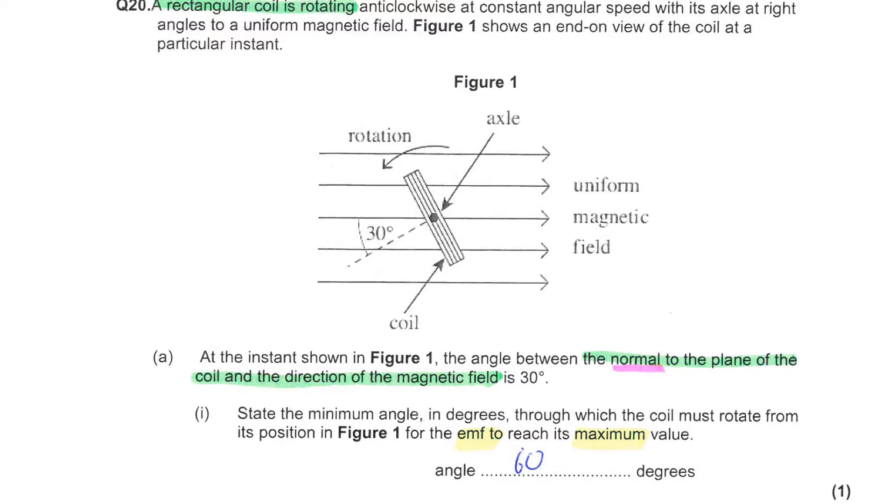You are asked to state the minimum angle in degrees through which the coil must rotate from its current position in order for the EMF to reach its maximum value. First of all, consider the coil position for maximum induced EMF. The size of the induced EMF is equal to the rate of change of flux linkage. This occurs when field lines are being cut at the maximum rate, which occurs when the coil is horizontal. In order for the coil to be horizontal, it must rotate through 60 degrees.